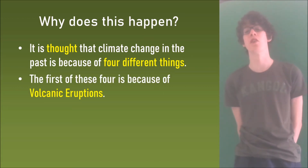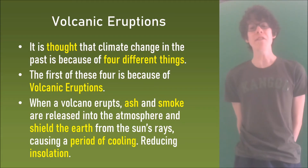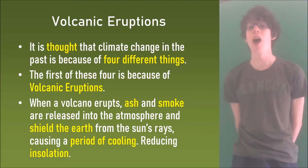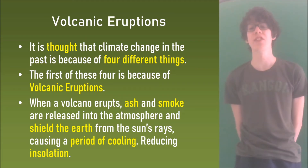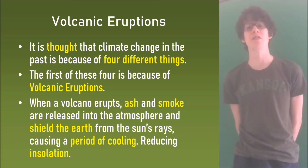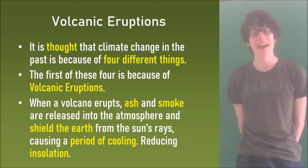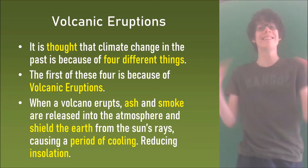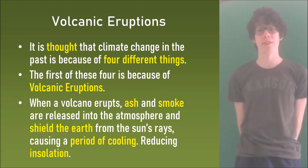The first of these four is volcanic eruptions. When a volcano erupts, ash and smoke are released into the atmosphere and shield the earth from the sun's rays, causing a period of cooling and reducing insolation. Insolation is the earth's intake of heat and radiation from the sun.